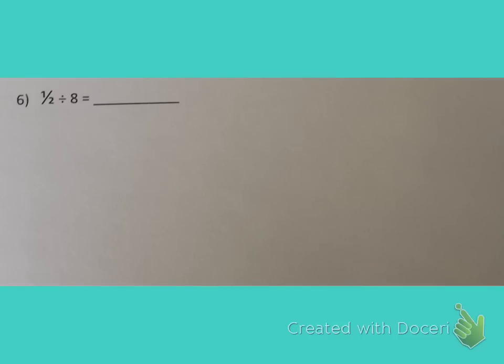Last but certainly not least, we have a division problem where we are dividing a fraction by a whole number. And this is something you should have done in fifth grade. So we're going to keep in mind that keep change flip thing that you may have talked about last year. We're going to keep the first fraction, change the division symbol to a multiplication symbol, and then flip the second fraction. Well, I have 1 half divided by 8 which is a whole number so first we need to write 8 as a fraction. And remember we do that by writing 8 over 1.